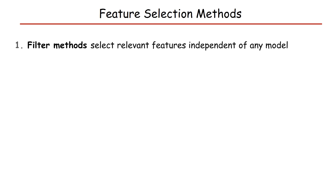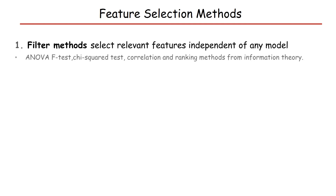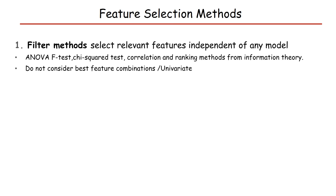Filter methods select relevant features independent of any model. Examples include different statistical tests, correlation measures, and ranking methods from information theory like information gain. Filter methods generally do not consider the best feature combination because they are univariate — they explore dependency between each variable and outcome individually.